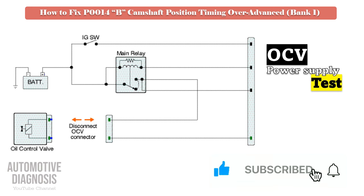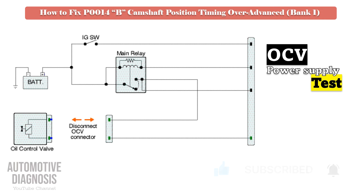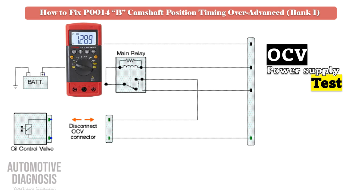For testing the OCV power supply voltage, turn the ignition on with the bank 1 exhaust OCV connector disconnected. Then check the supply voltage using a multimeter on the relevant pin. In this test, you must measure the battery voltage on the multimeter.